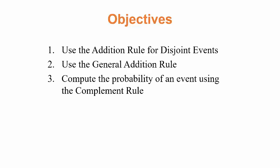Hi class. In this lecture we want to talk about two rules: the addition rule and the complement rule. This lecture has three objectives: using the addition rule for disjoint events, the general addition rule, and computing the probability of an event using the complement rule. The complement rule is pretty straightforward and you've probably used it without even realizing it was called the complement rule.